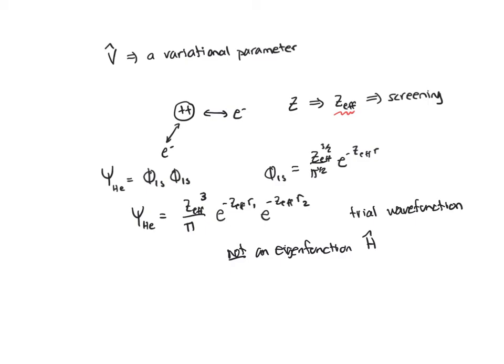So I can't find an eigenvalue, but I can find the expectation value of the energy. I'm going to find the expectation value for that energy and minimize it with respect to Z_effective. I'll take the derivative of that expectation value, set it equal to zero, and solve for the Z_effective that gives me a minimum.